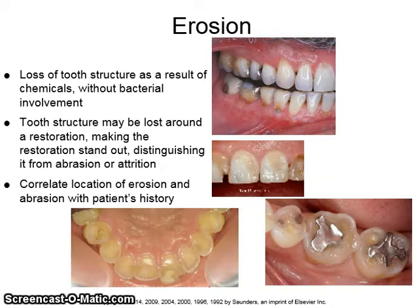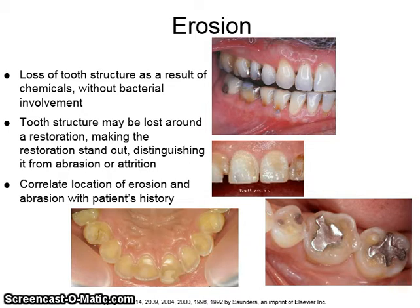Erosion is the loss of tooth structure as a result of chemicals without bacterial involvement. Tooth structure may be lost around a restoration, making the restoration stand out, distinguishing it from abrasion or attrition. You can correlate the location of erosion and abrasion with the patient's history.